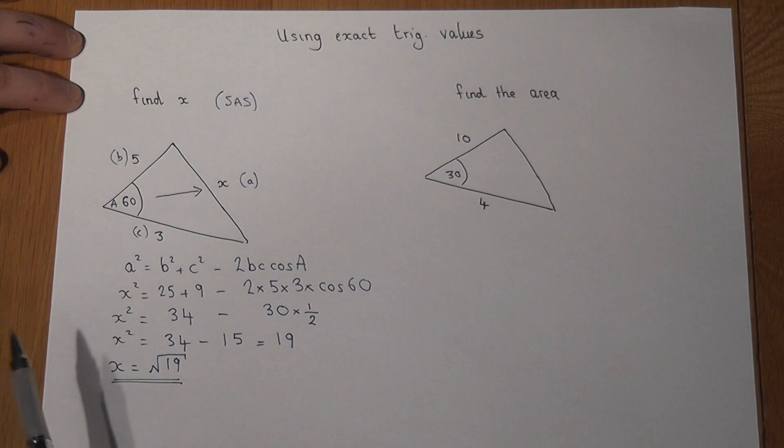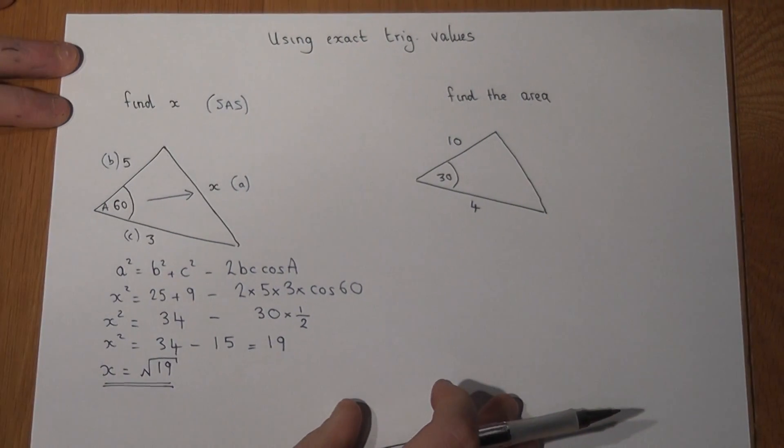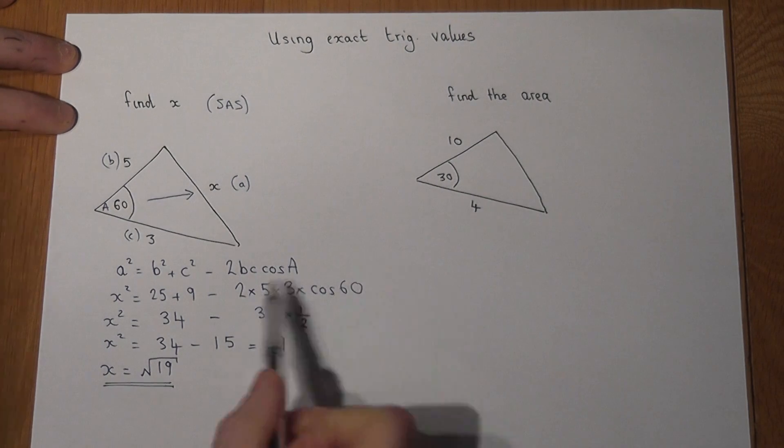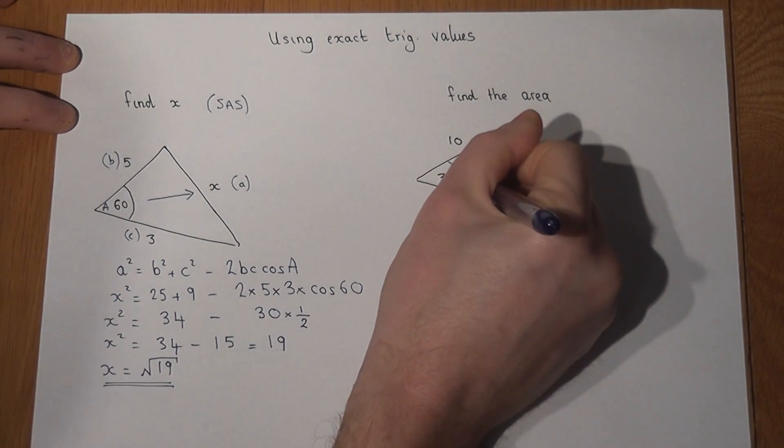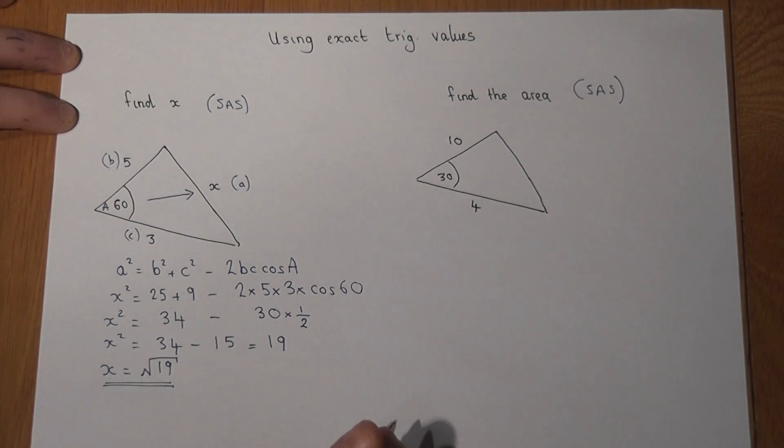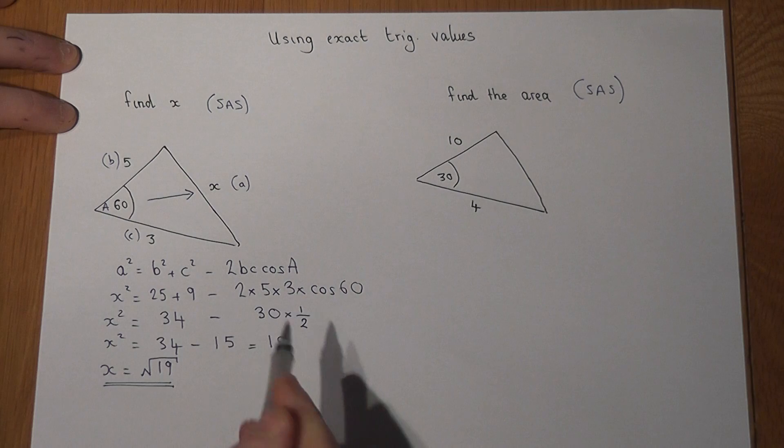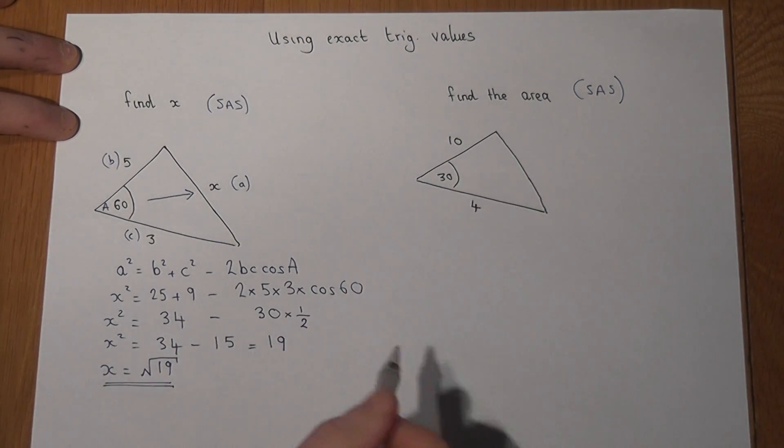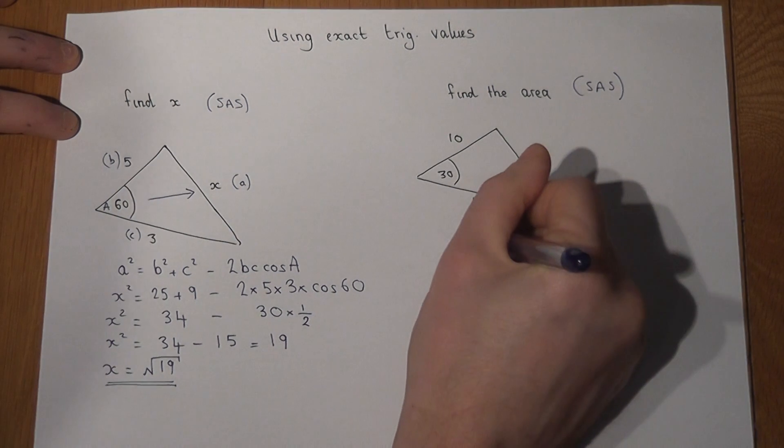The second problem also involves this side-angle-side, or SAS, but it asks for the area. There's a comparable formula to find the area of a triangle given these measurements, and this is the area equals a half ab sine C.